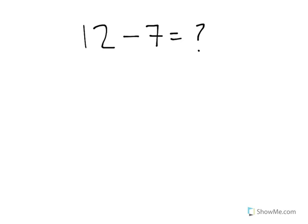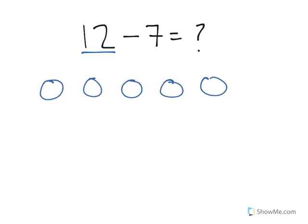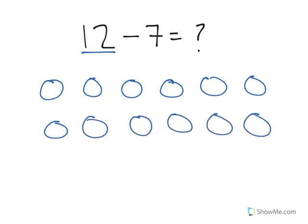Let's think about what 12 minus 7 means. 12 minus 7 means you start with 12 of something. So I'm going to draw 12 circles: 3, 4, 5, 6, 7, 8, 9, 10, 11, 12.